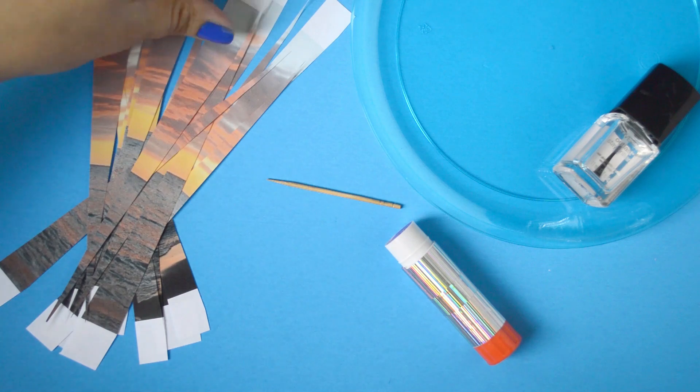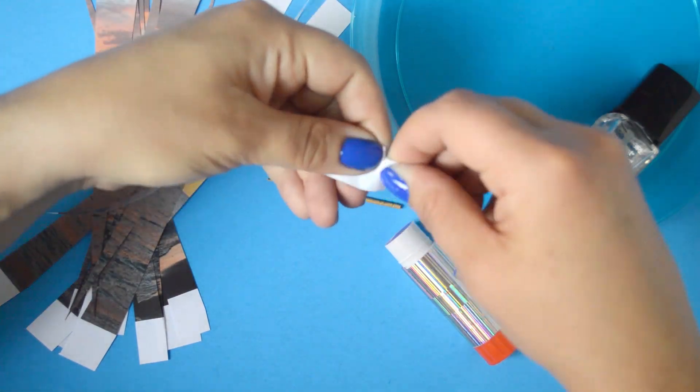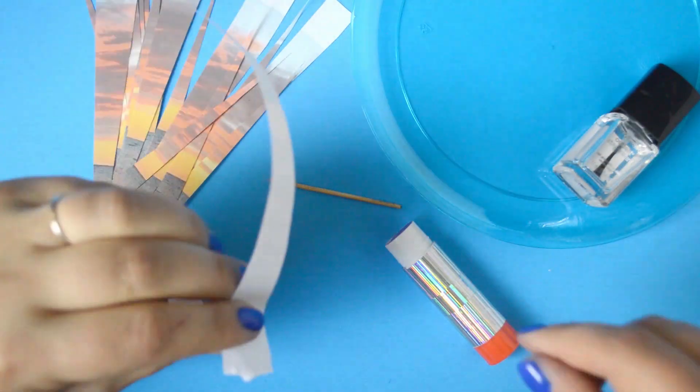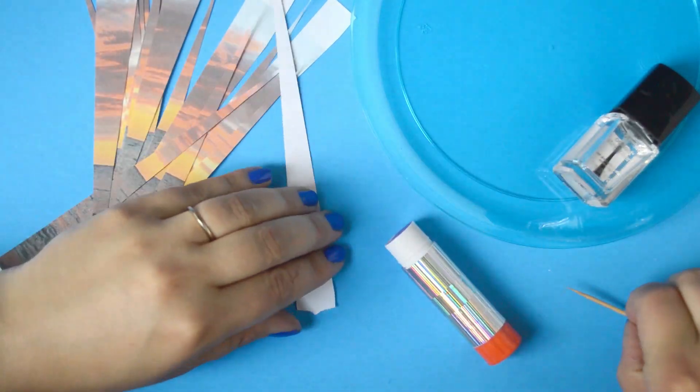Start by printing off your pictures using a colored printer. Regular printer paper is fine for this. And then cutting them into long, thin triangles using scissors or a paper cutter.